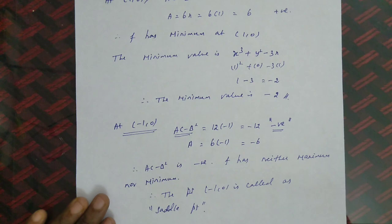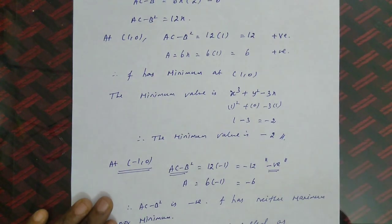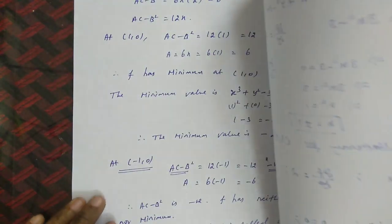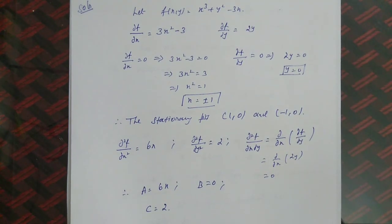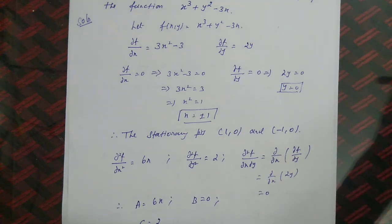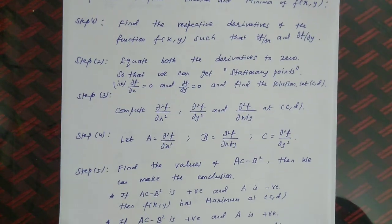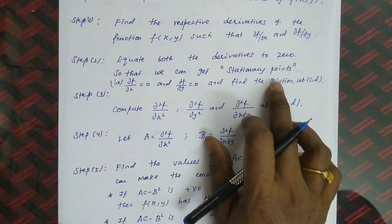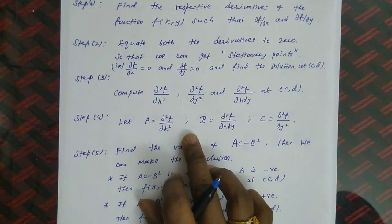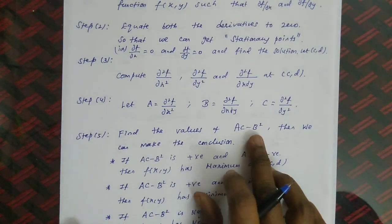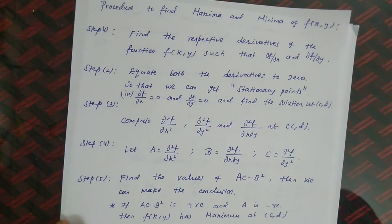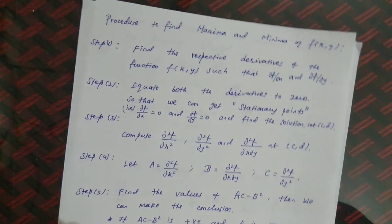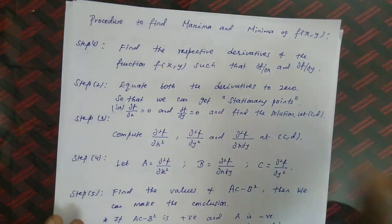This is the way we solve the problem. In this question we had two stationary points — (1, 0) and (−1, 0) — so the problem is complete. If there were more stationary points, we would continue the procedure. To summarize: find partial derivatives, equate to 0 for stationary points, find second derivatives, compute AC − B² and A, then draw the conclusion. Thank you for watching.